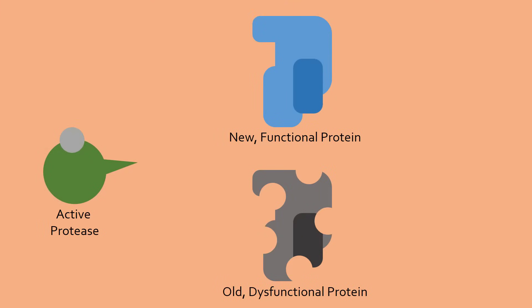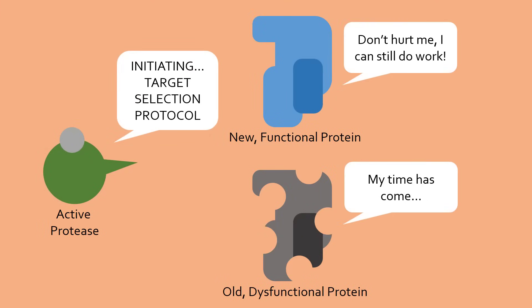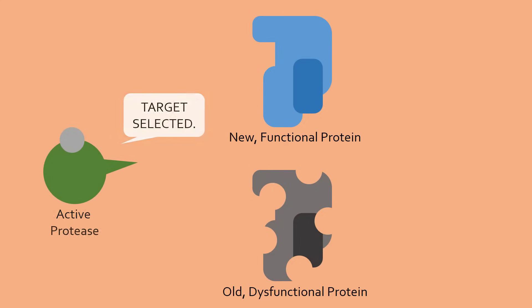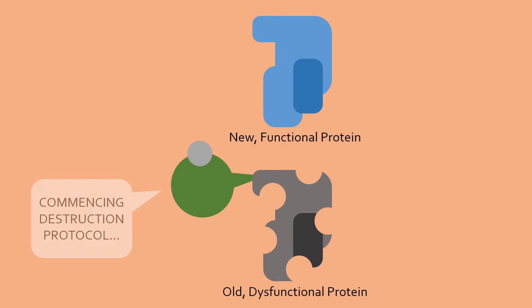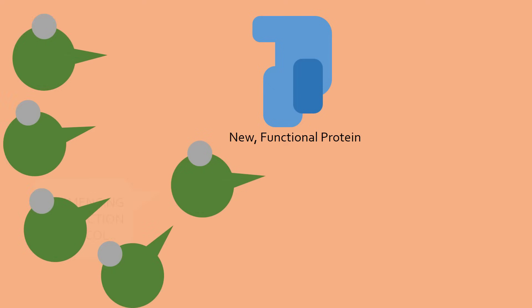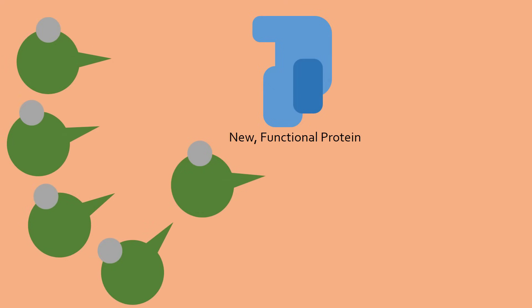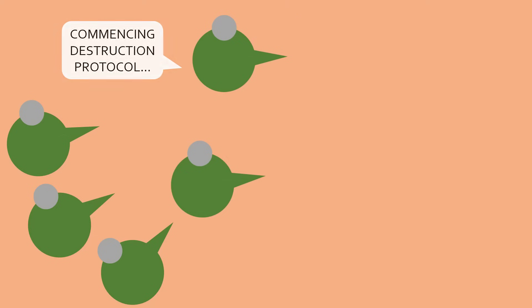Normally, by carefully regulating cellular calcium levels, these proteases only break down old and damaged proteins. However, in DMD, extremely high calcium levels activate too many of these proteases, which begin to break down important functional proteins as well. This kills the myocyte.